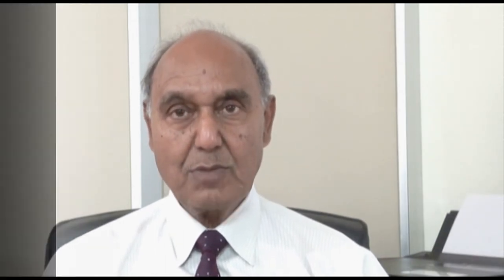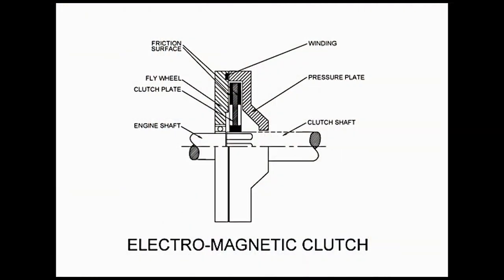Now let us take a look at the diagram of the electromagnetic clutch. In this diagram you will find, as usual, the engine shaft, the flywheel, the clutch shaft, pressure plate and clutch plates. These are the common components of a clutch.